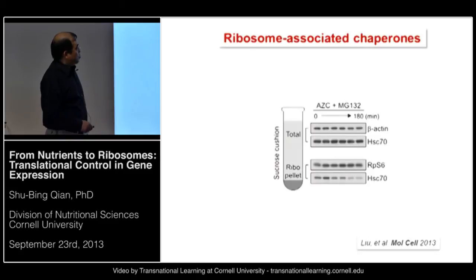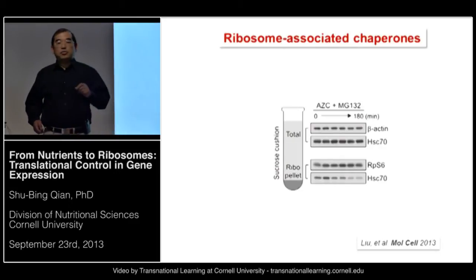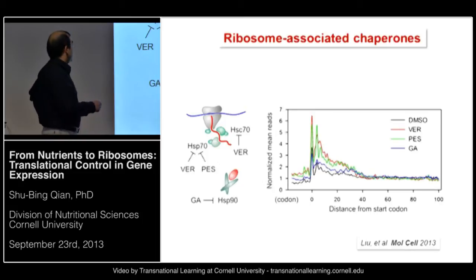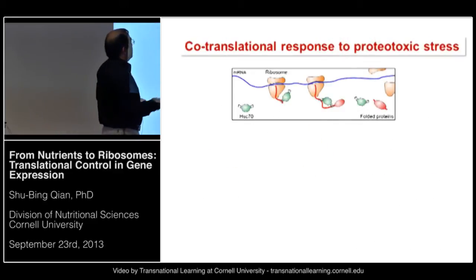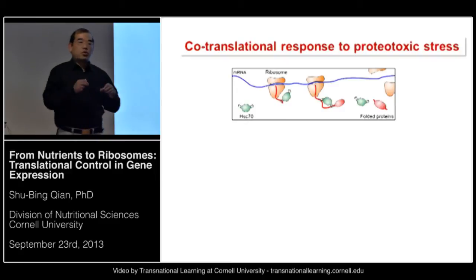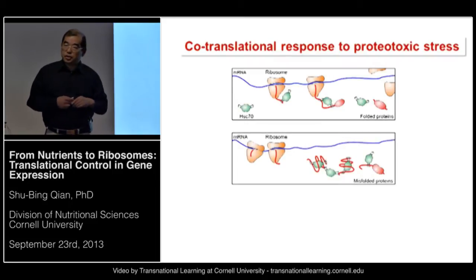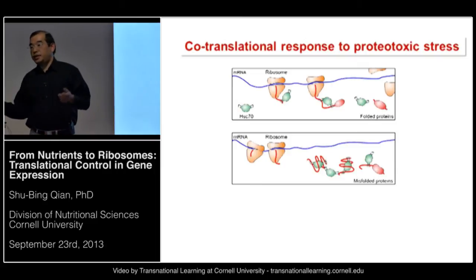Indeed, we found a progressive loss of ribosome-associated chaperones along with proteotoxic stress. To confirm that chaperones play a role in this process, we tested a variety of chaperone inhibitors. Only HSP70/HSC70 inhibitors like VER or PES — but not HSP90 inhibitors like geldanamycin — were able to recapitulate the early ribosome pausing. We came to a model: ribosome-associated chaperones not only assist co-translational folding of nascent chains, but also play an active role in controlling ribosome translation elongation. When the cell is under stress, the lack of chaperone-ribosome association may tell the ribosome to fine-tune the translation rate, providing a rapid co-translational mechanism to maintain protein homeostasis.